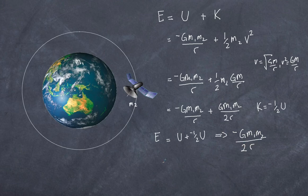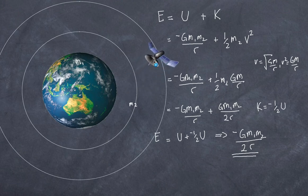The total energy of the satellite is also negative. It increases as you move away from the Earth — you have to do work on it — and it tends towards zero at an infinite distance. If the satellite moves into a higher orbit, the radius increases, its velocity decreases according to our formula, but the total energy is still greater than it was at the lower orbit.